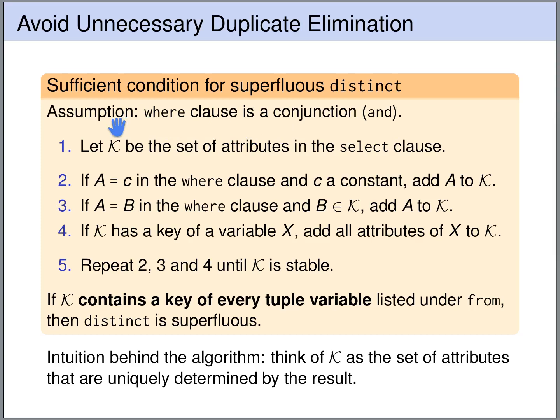We start by tracing the output row backwards — beginning with what is uniquely determined by the output row. The set of attributes uniquely determined by the output row is of course all the attributes that appear in it, which are the attributes in the SELECT clause. So we start with the set K that contains all the attributes in the SELECT clause; all of those are uniquely determined by the output row. Next, we are going to extend the set K.